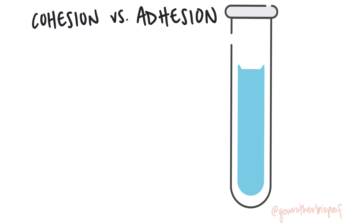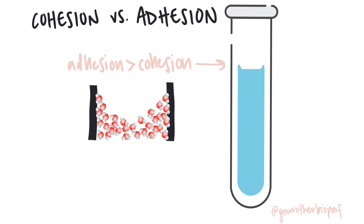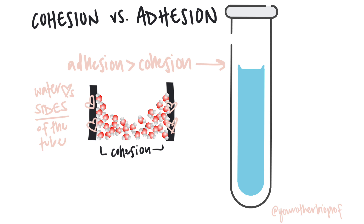The big reason cohesion and adhesion get mixed up is because in so many examples they actually occur together. I've got a little test tube over here to emphasize this. When adhesion is stronger than cohesion, you can get a meniscus — you can see water sort of climbing up the sides of the container. Adhesion greater than cohesion means water is more attracted to the surface of the test tube than to other water molecules, so it maximizes its surface contact with the glass. Cohesion is still present, with water molecules still being sticky with each other below the surface.